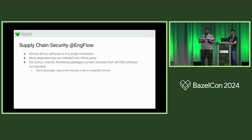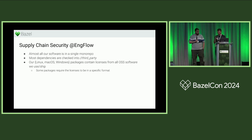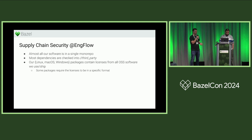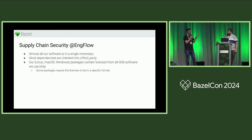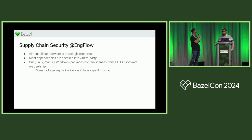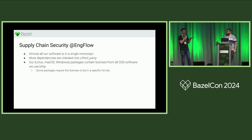At Enchflow, we have our own requirements. We were founded about four and a half years ago and have pretty much all our software in a single mono repo. We check in most of our dependencies, though more recently we've started using more workspace dependencies via BazelMod, so not everything is checked in anymore. We do ship software to customers and use some third-party libraries like Guava.